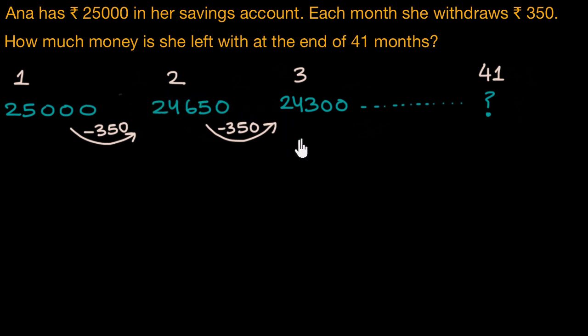every successive term is 350 less than its preceding term. So, whenever we have a pattern that involves adding or subtracting a constant number to each term, to get to the next term, we have an arithmetic progression.